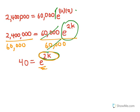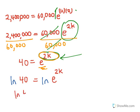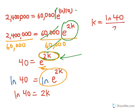The inverse operation of exponentiating with base e is the natural logarithm. So we take the natural log of both sides of the equation to undo the exponentiation with base e. That gives us the natural log of 40 on the left side and 2k on the right side. So 2k equals the natural log of 40, which means k equals the natural log of 40 divided by 2.